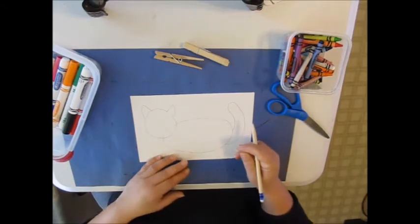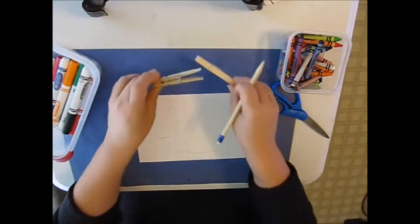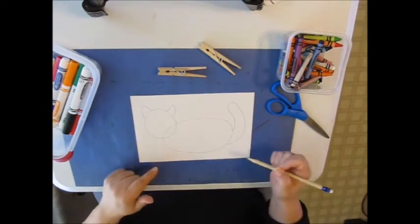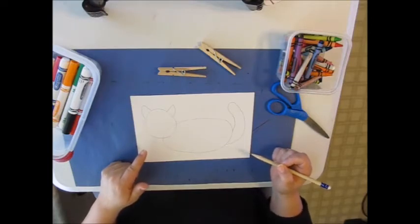You need to do a four-legged animal. These are your legs. Now what I'm going to do is I'm going to add detail to my cat and color it in.